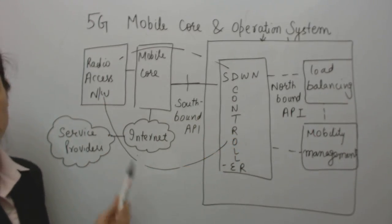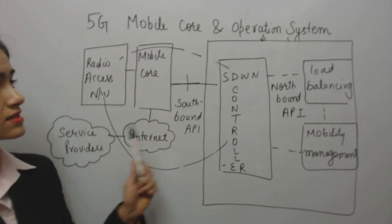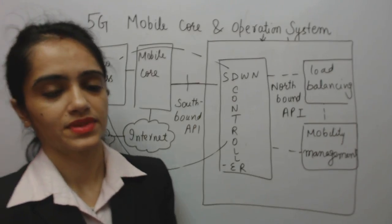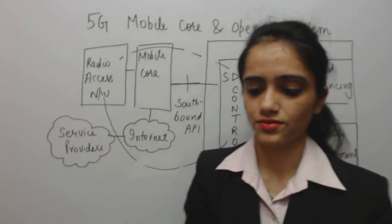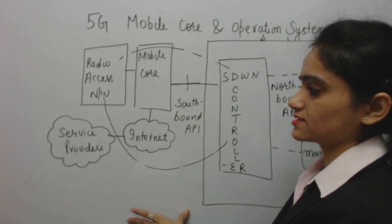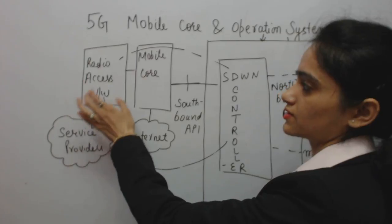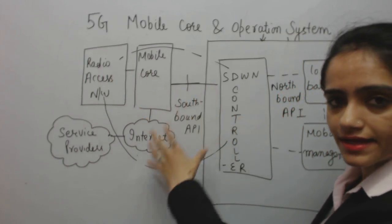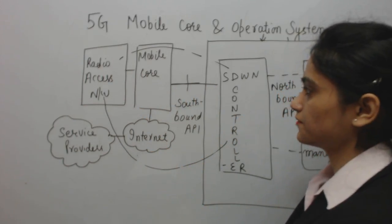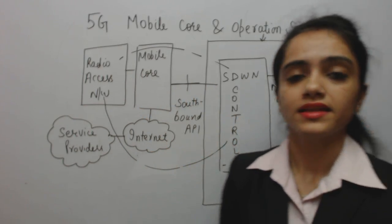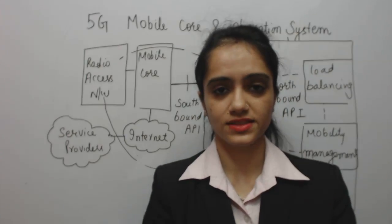So this is the complete operation system. In today's class we have discussed what is radio access network, what is connected to mobile core, the entities in the core network, and the entities in the operation system. Thank you so much.